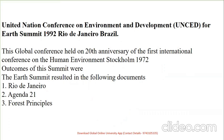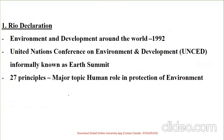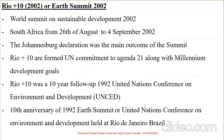The United Nations Conference on Environment and Development (UNCED), also known as the Earth Summit or Rio Summit, was held in Rio de Janeiro, Brazil. It was a global conference held on the 20th anniversary of the first international conference in Stockholm in 1972. The outcomes were three things: the Rio Declaration, Agenda 21, and Forest Principles. The Rio Declaration covered 27 principles with the major topic being the human role in protection of the environment.